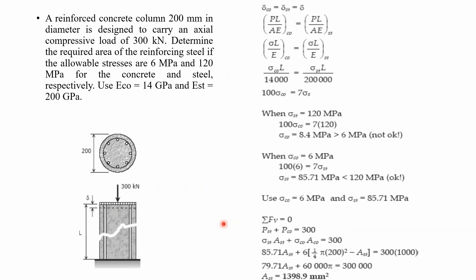Let us now take the first numerical on composite bars. A reinforced concrete column 200 mm in diameter is designed to carry an axial compressive load of 300 kilonewtons. Determine the required area of reinforcing steel if the allowable stresses are 6 MPa and 120 MPa for concrete and steel respectively. The modulus of elasticity for concrete is 14 GPa and for steel it is 200 GPa. The diagram shows a circular column of diameter 200 mm subjected to an axial compressive load of 300 kilonewtons.